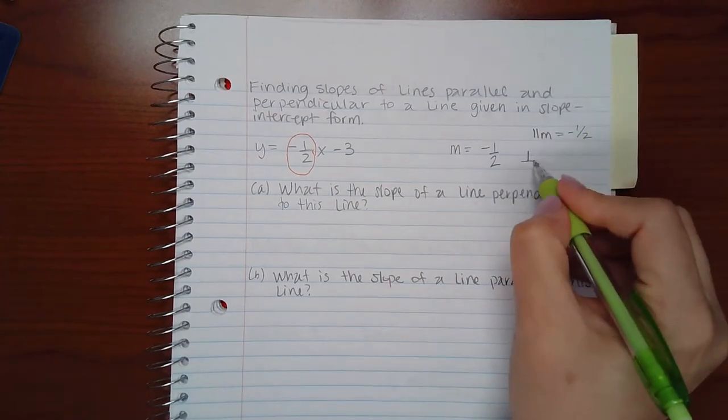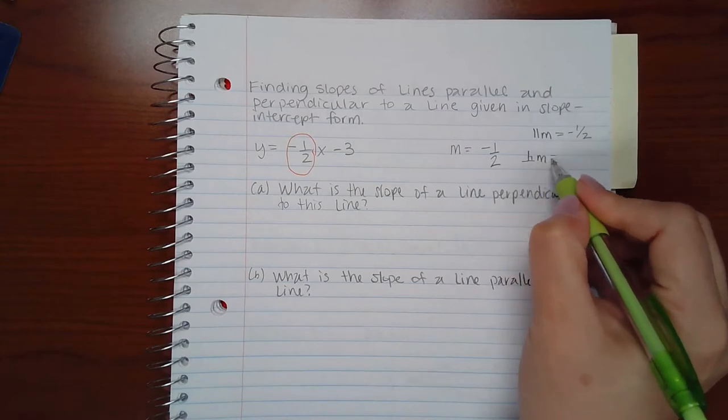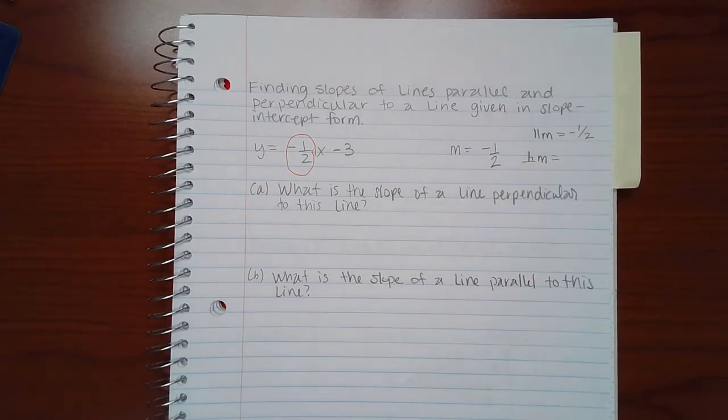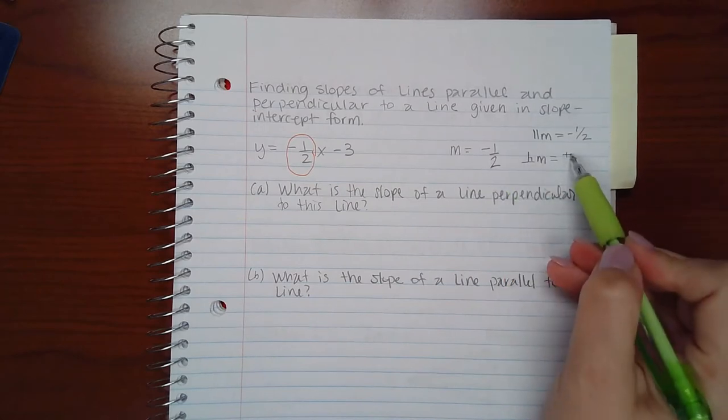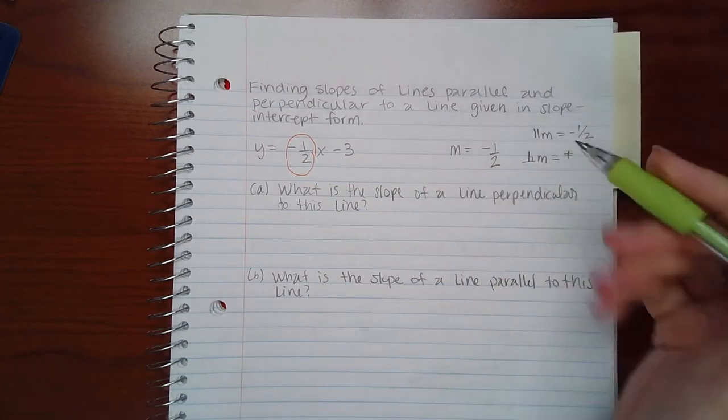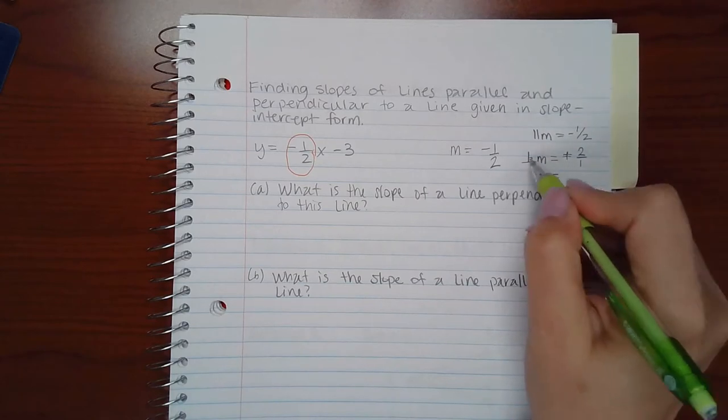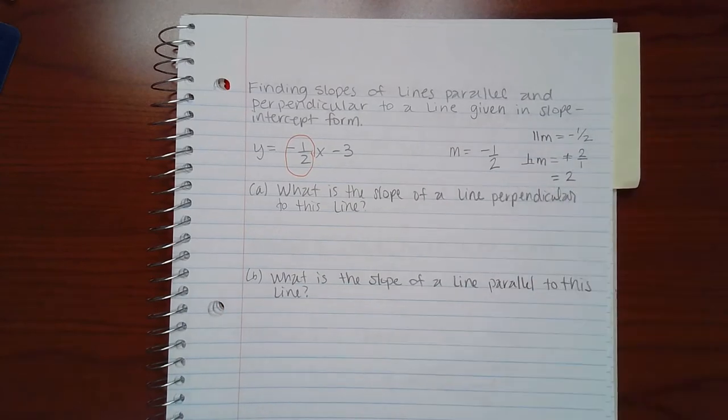However, a perpendicular slope will be the opposite reciprocal. What is the opposite of negative? That would be positive. And the reciprocal means to flip over the fraction. So a perpendicular slope would be positive two. This is important to know this information.